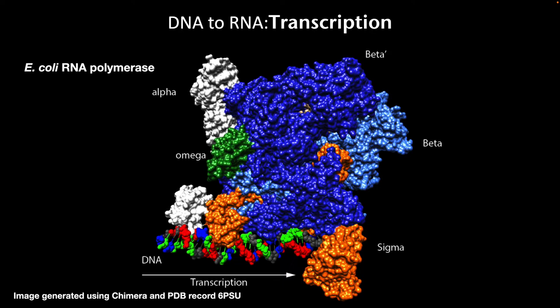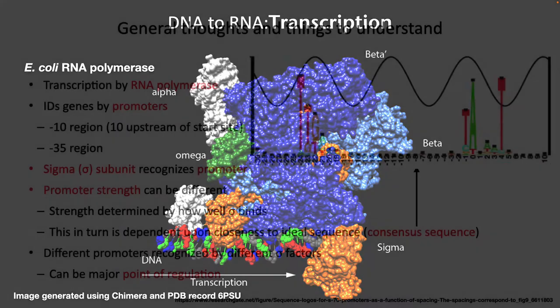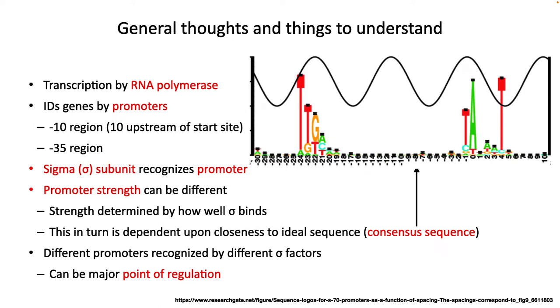Transcription is the first step in moving from DNA to protein. RNA polymerase is the leading player in this process. The process is called transcription because the language is not really changing — DNA-based sequence to RNA-based sequence is all nucleotides. Shown on this figure is an actual x-ray crystal structure of the E. coli RNA polymerase. RNA polymerase carries out transcription and recognizes promoters with its sigma subunit.